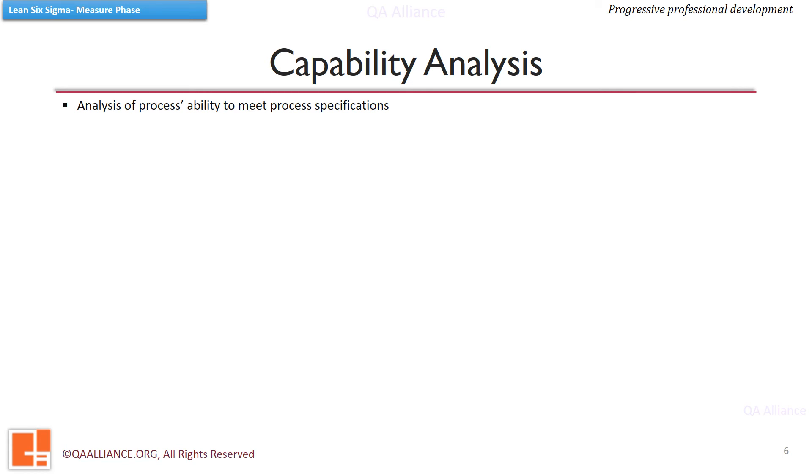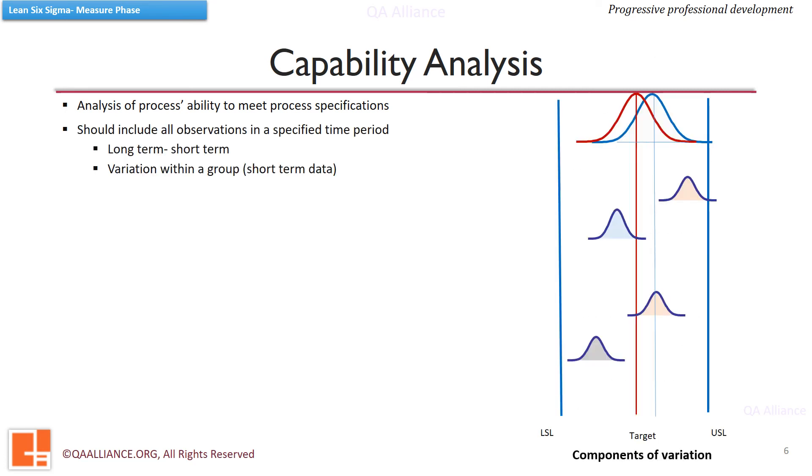We do this with the help of capability analysis. To do capability analysis we need to include all the observations in a specified time period. It helps in analyzing variation in short term data. Though this variation can exist within the batches or groups of observation as well as between the groups.